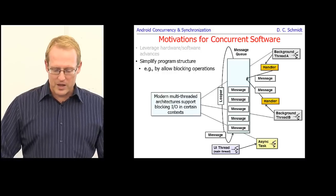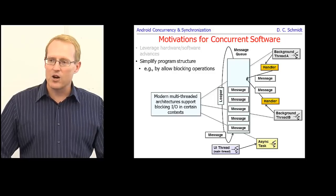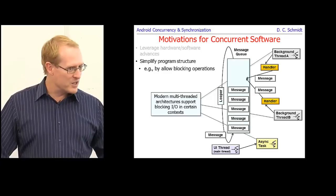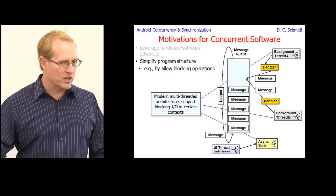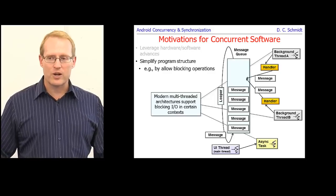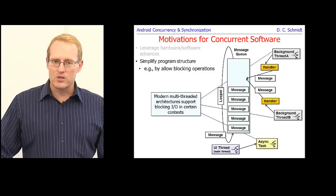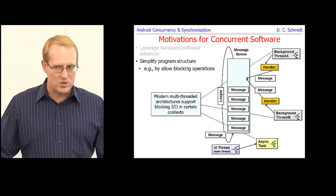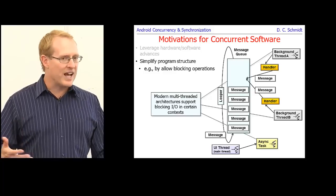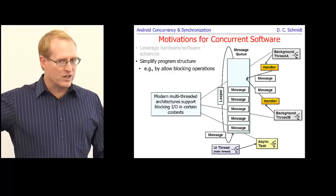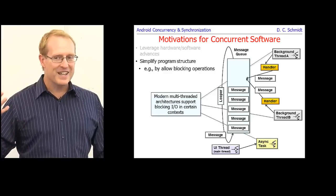Modern multi-threaded architectures support blocking I/O in certain contexts. In Android, these are contexts for things that can run in the background in spawned threads. We'll work on the runnables and handlers model, the messages and handlers approach, and async task — all of which allow background operations to run concurrently and do blocking operations without affecting the main thread of control.